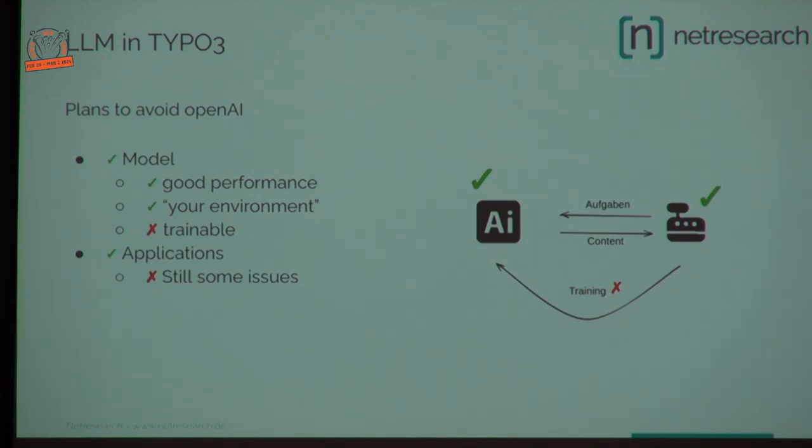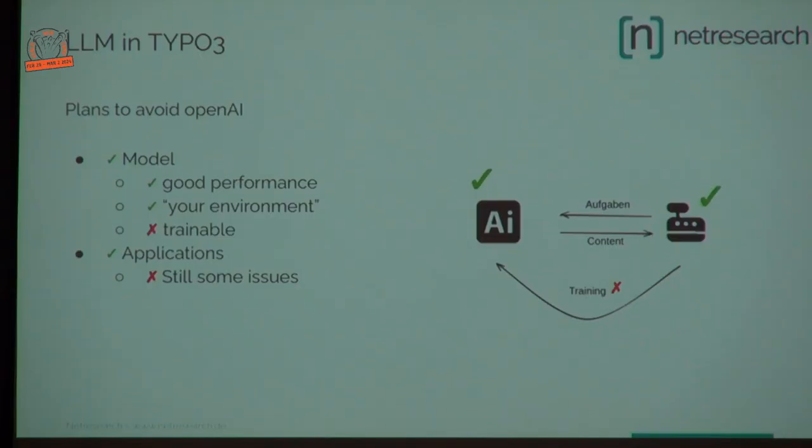We played around with some open-source tools and put some together, and we're in a good position to completely move away from OpenAI. We can now run our own model and set it on any environment we want, as long as the environment's performance fits. We can use the co-writer as an application with it. At the moment it's not yet trainable — we're working on it, and it may take some days or weeks until we can train the model too.